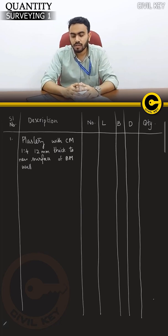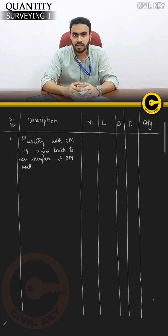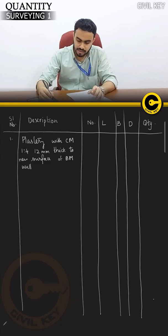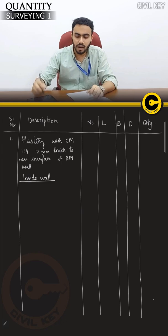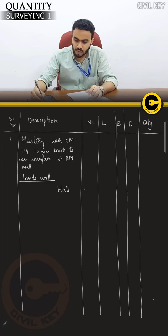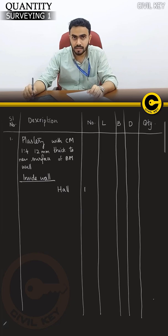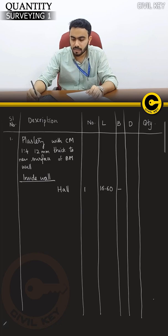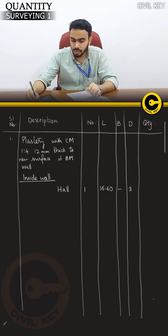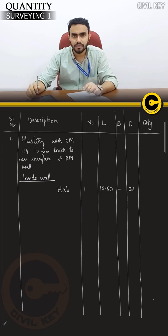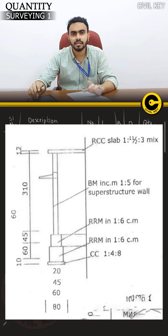We have cement mortar 1:4, 12mm thick, to new surface of brick masonry wall. This is the specification for plastering. For the inside wall — the first wall — the inside wall is the first wall. The length is 16.6, the height is 3.1. The height is the same in all cases. At the height of the wall, I will measure from floor to roof.